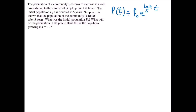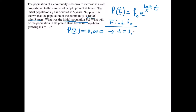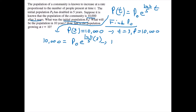We have the function p of t describing the population at time t, but we still need to find p0. We're told that the population is 10,000 after three years, meaning p of 3 equals 10,000. Plugging those into our equation gives us 10,000 equals p0 times e to the natural logarithm of 2 over 5 times 3. So p0 equals 10,000 divided by e to the 3 times the natural logarithm of 2 over 5. When we evaluate, we find that p0 is approximately 6,597.5.